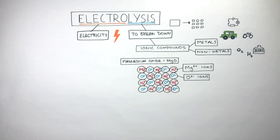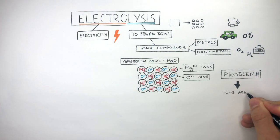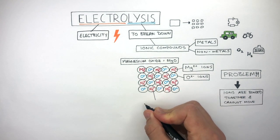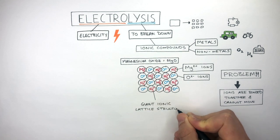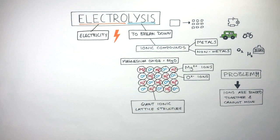For electrolysis to work, the ions must be free to move. Now, this is a problem because the ions are bonded together and cannot move. This is due to the giant ionic lattice structure which ionic compounds have. The ions are in a regular arrangement where they can only vibrate in a fixed position. As long as the ionic compound is solid, electrolysis cannot work.